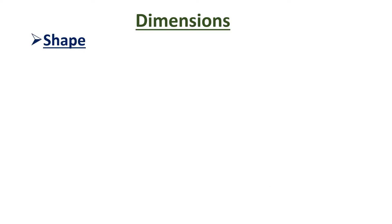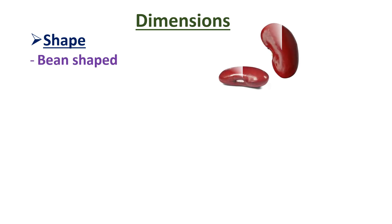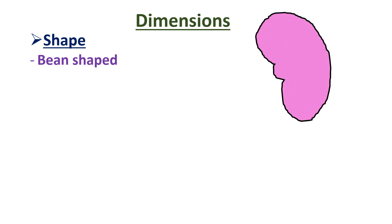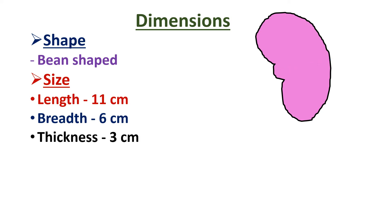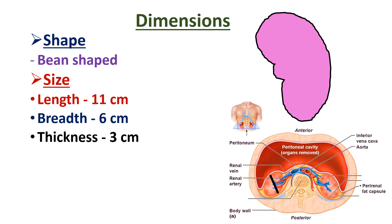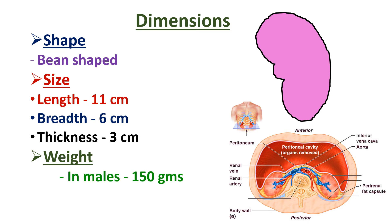Coming to the dimensions of the kidney: kidneys are bean-shaped. The vertical length measures about 11 cm, the transverse breadth measures about 6 cm, and the anteroposterior thickness measures about 3 cm. Regarding weight, in males a kidney weighs 150 grams, while in females it weighs about 130 grams.